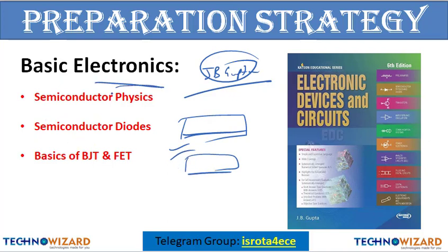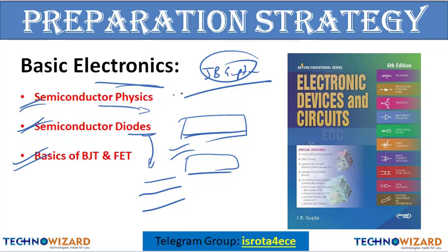I have divided basic electronics into three parts: semiconductor physics, semiconductor diode, and the basics of BJT and FET. In diodes, you will learn about tunnel diode, varactor diode, ordinary diode, and LEDs. In semiconductor physics, you will study drift current, diffusion current, depletion region, and other topics such as what is a coulomb and how many charges are there in one electron.